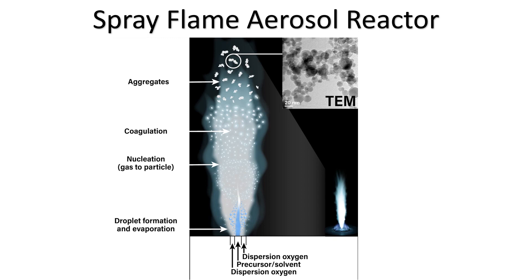Due to supersaturation, the gaseous product nucleates to form particles, which travel along the flame and grow in size due to coagulation, forming aggregates.